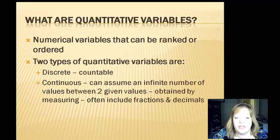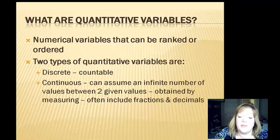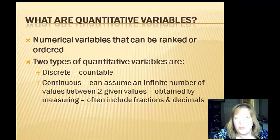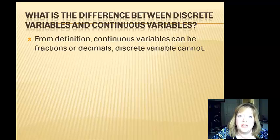Two types of quantitative variables: you could have discrete, which are countable — one, two, three, four, five, and so on, the counting numbers. You could have continuous, which is when you have to round because you're measuring something. Continuous can assume an infinite number of values between two given values — like 1.1, 1.11, 1.112, and so forth. They're often obtained by measuring and include fractions and decimals. Discrete variables are whole numbers; continuous variables have fractions or decimals.